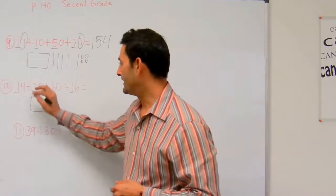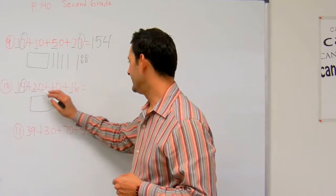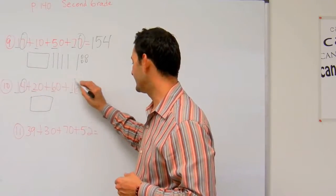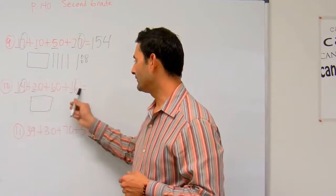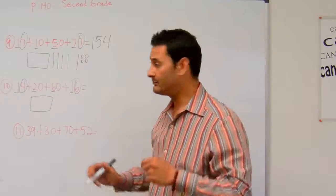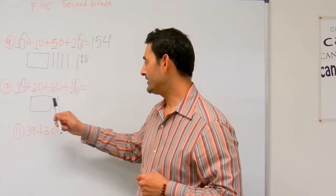And then now let's take a look at the ones. I've got 4, 0, 0, and I've got a 6. 6 plus 4, or 4 plus 6 is 10. That's 1 bundle of 10. So I have 100, 110.